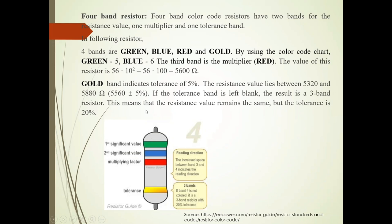So how its value can be determined? By using color code chart. The green value of the color indicates 5. Blue indicates 6. And third band is multiplier. Red, it is red. So 10 raise to 2 multiplier. So we can write green, blue, 56 into 10 raise to 2 multiplier of red band.